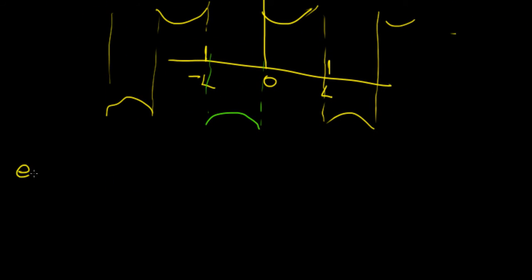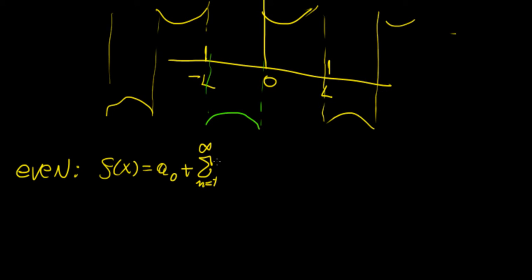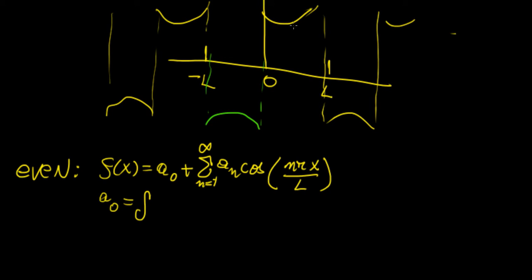If we perform an even half-range expansion, we're going to get the sum from n=1 to infinity of aₙ cosine(nπx/L). Our Fourier coefficients are defined within that half range because the function is only defined there. We're creating a virtual version of the function to find the Fourier series expansion. So a₀ is going to be 1/L times the integral from 0 to L of f(x) dx.